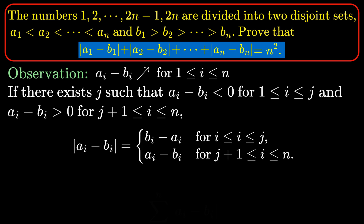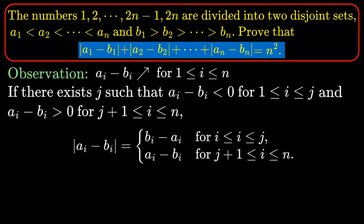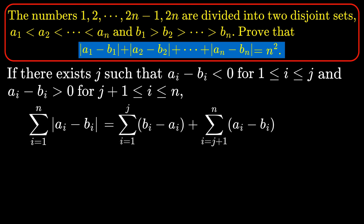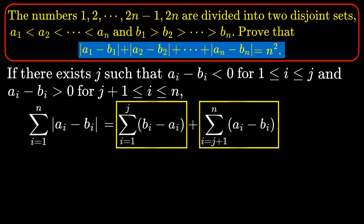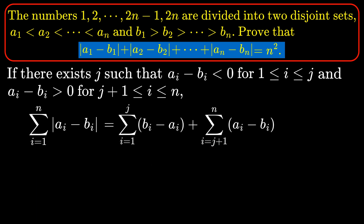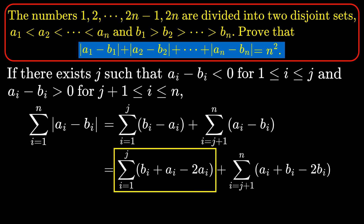Note also that a_i minus b_i can never be 0, as the two sets consist of distinct numbers. We can then rewrite the sum of absolute values using summation notation where i runs from 1 to n. Then the sum T equals two parts: the first sum from 1 to j of (b_i - a_i),